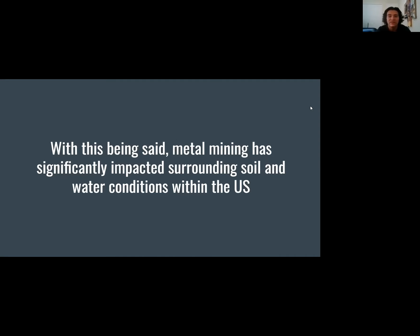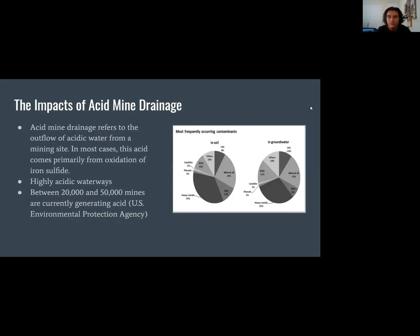Metal mining has significantly impacted surrounding soil and water conditions in the U.S. Acid mine drainage is a phenomenon occurring at both abandoned and active mine sites. It occurs when water flows over sulfur-contaminated broken rock, forming highly acidic sulfuric acid, which is detrimental to aquatic ecosystems by causing mucus formation in the gills of fish. According to the EPA, between 20,000 and 50,000 mines are currently generating acid. The most frequently occurring contaminants in both soil and groundwater are heavy metals.